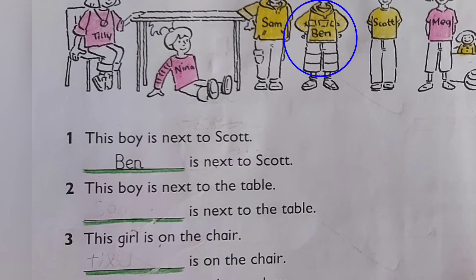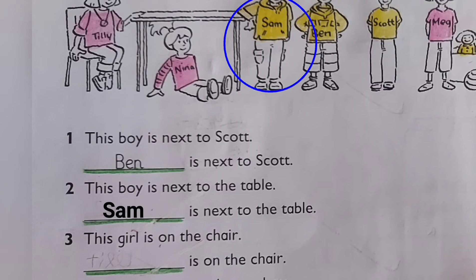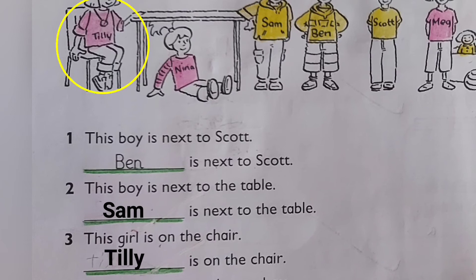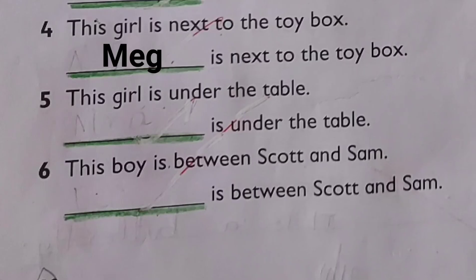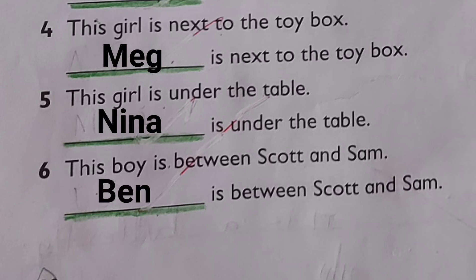Now let's practice. Number one: Ben is next to Scott. Number two: Sam is next to the table. Number three: Tilly is on the chair. Number four: Meg is next to the toy box. Number five: Nina is under the table. Number six: Ben is between Scott and Sam.